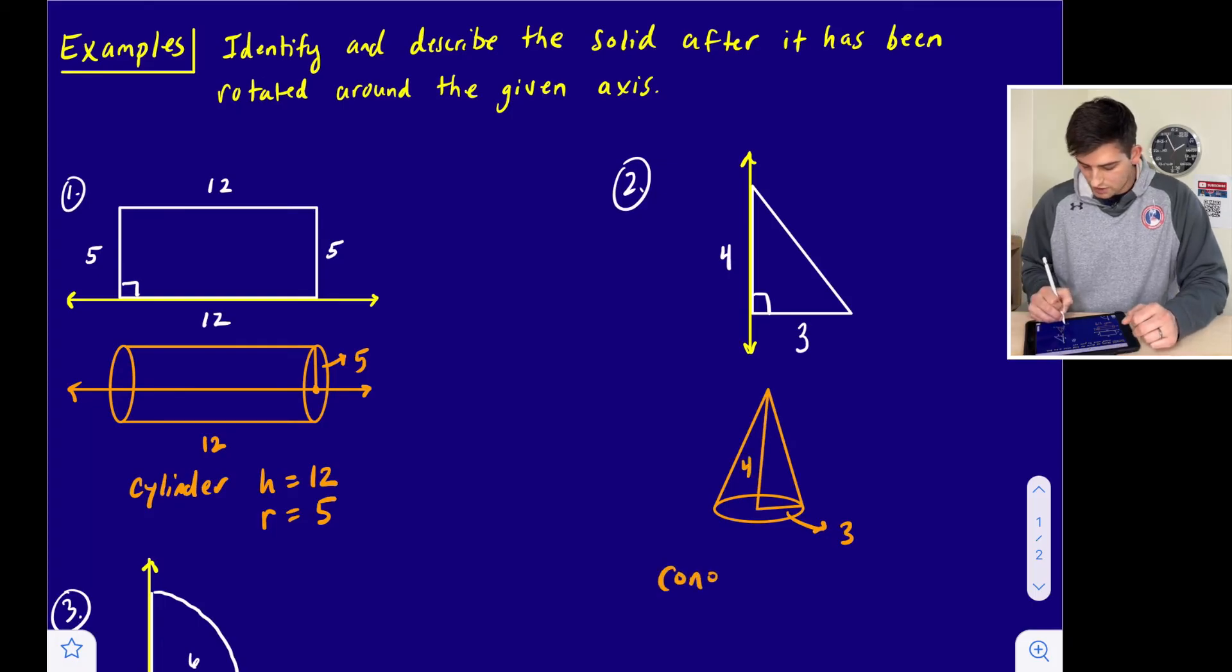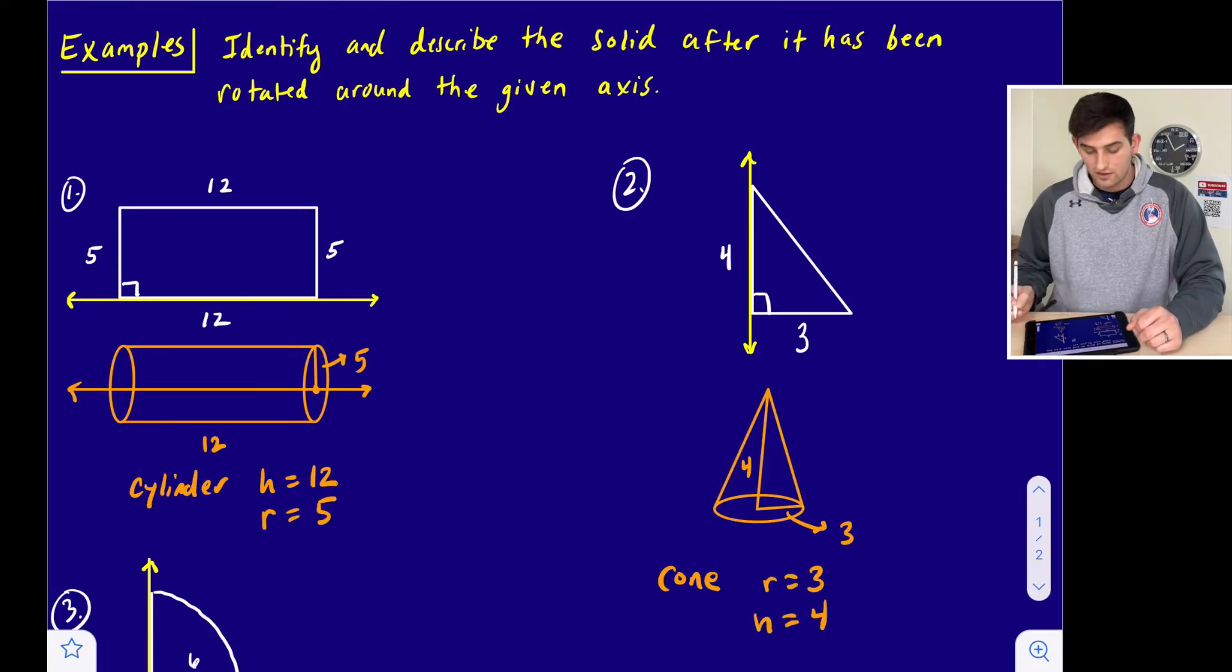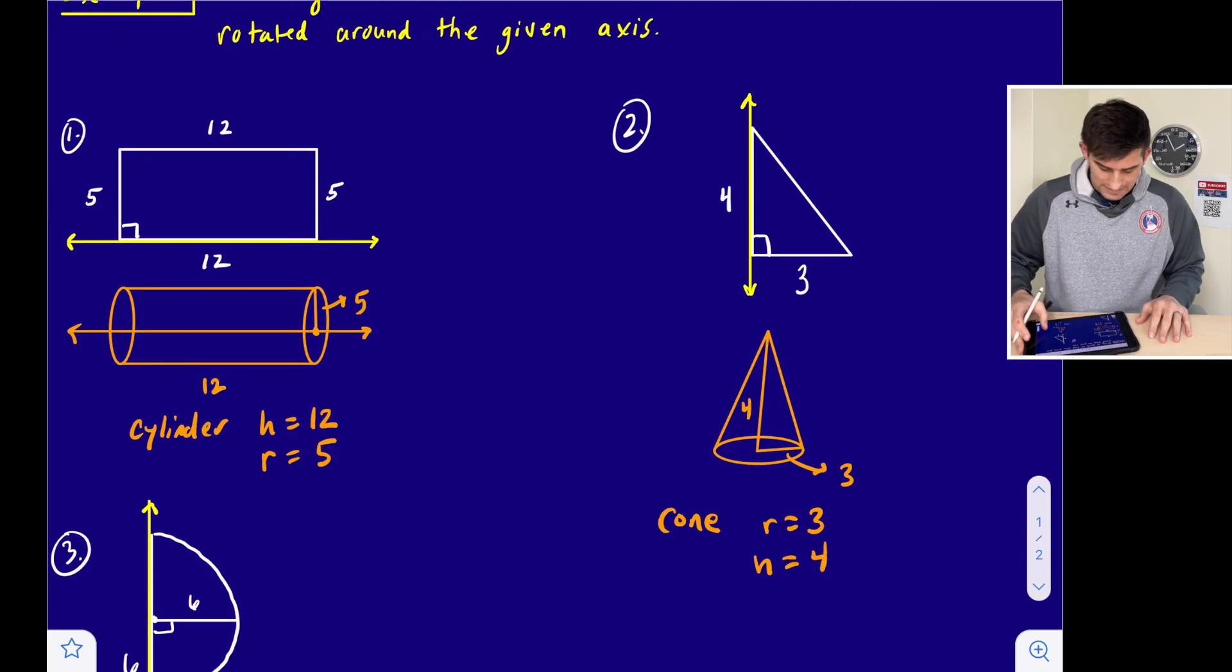This is going to give us a cone with a radius of three and a height of four. Once we take that right triangle and we rotate it around that axis.